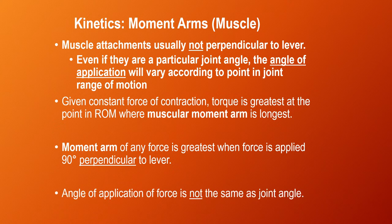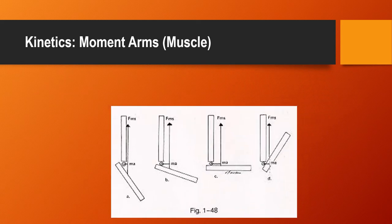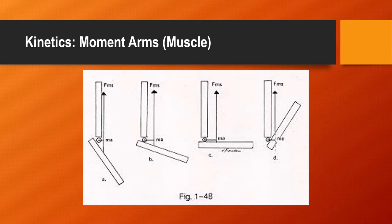Remember that the angle of application of force is not the same as the joint angle. The angle of application is the angle at which the tendon inserts into the bone. In example A, the muscular moment arm is quite short from the axis of rotation to the pull of the muscle. As we go to B and C, the point of muscle attachment on the bone has not changed, but because the limb segments are becoming more perpendicular, the moment arm is longest where the angle between the pull of the muscle and the axis of rotation is 90 degrees. However, if we continue to flex, the moment arm again gets shorter.